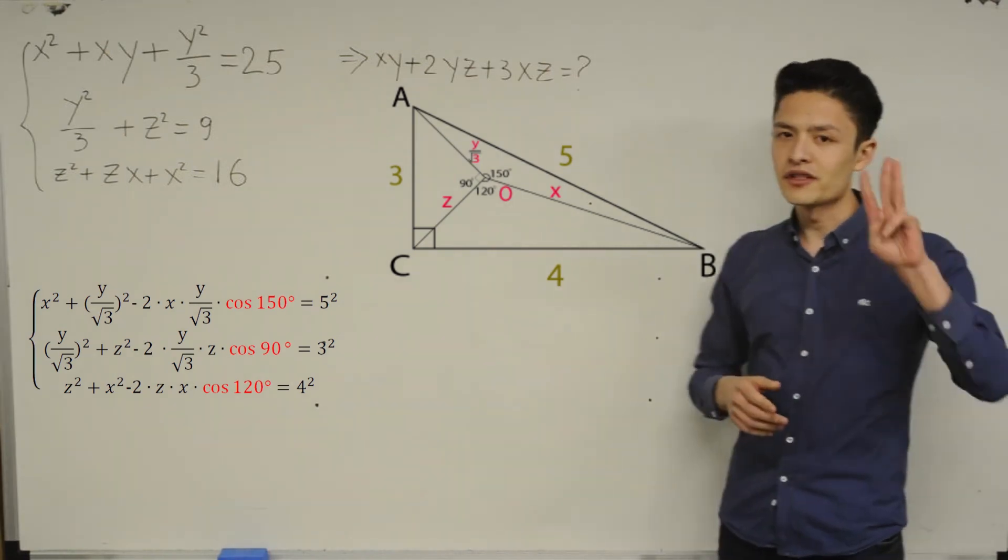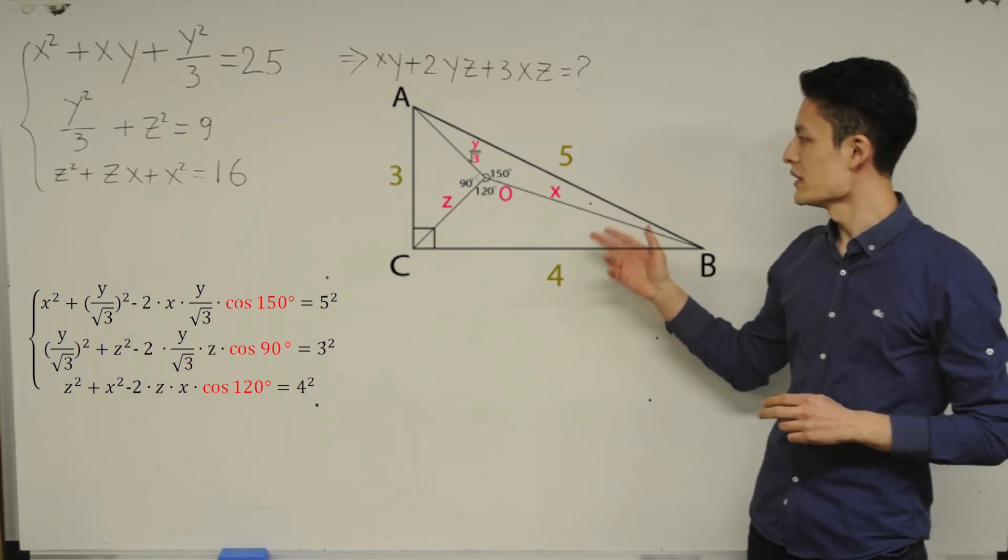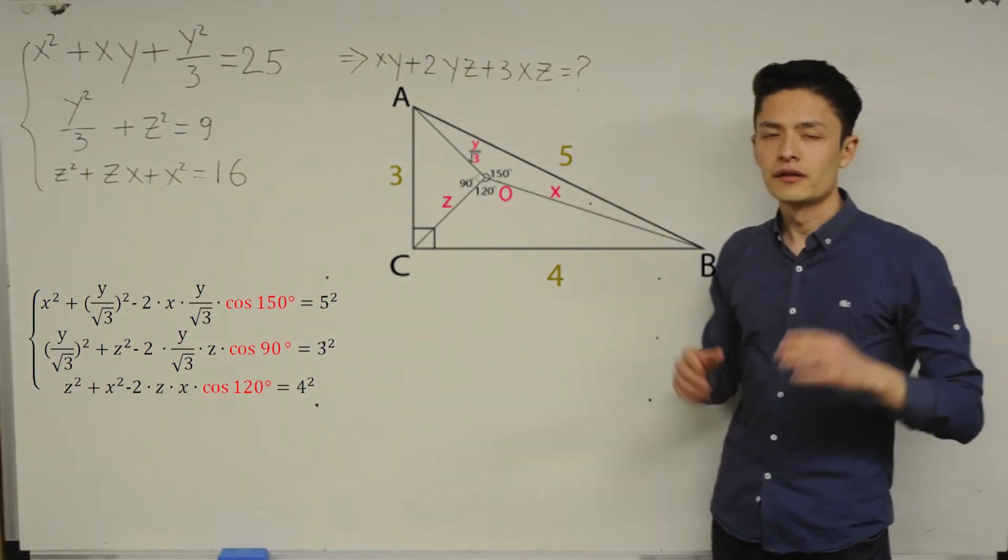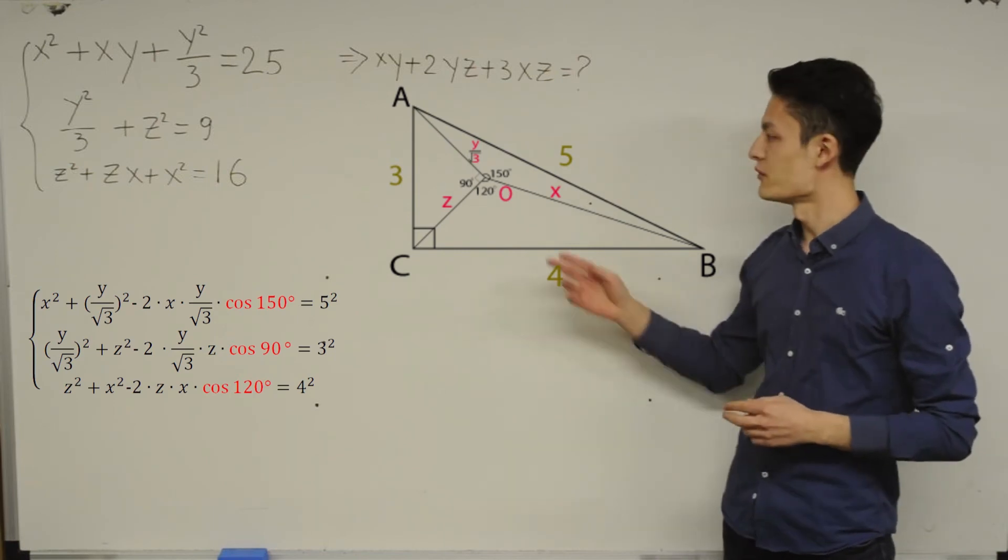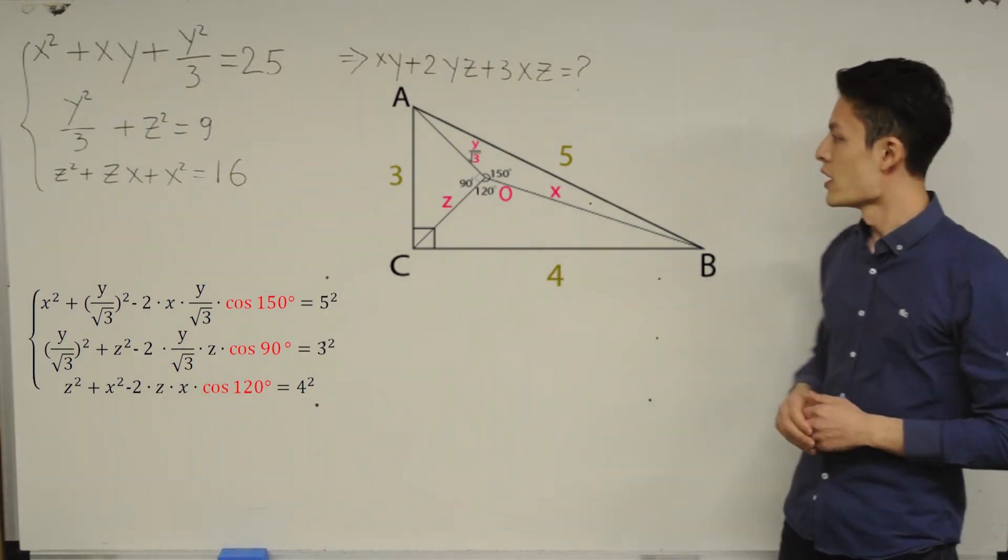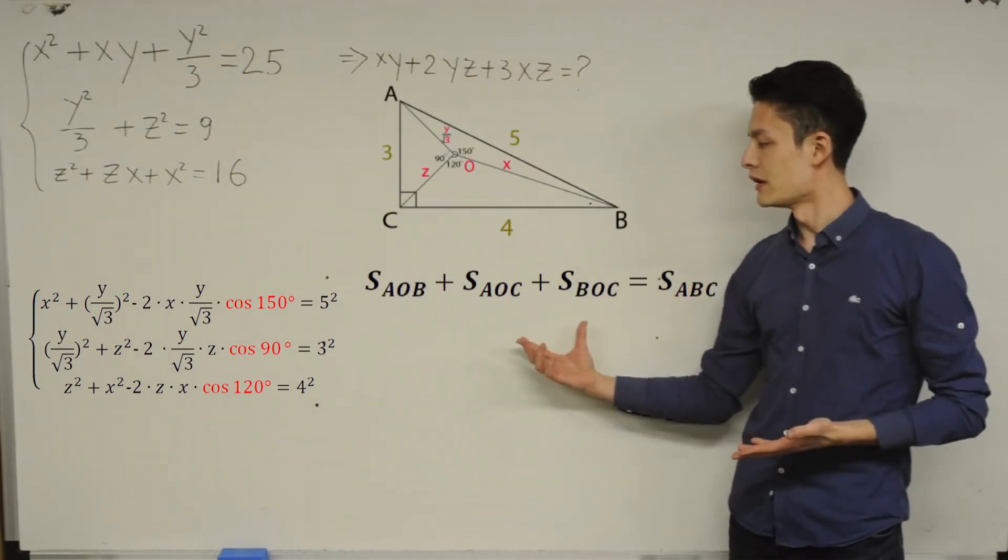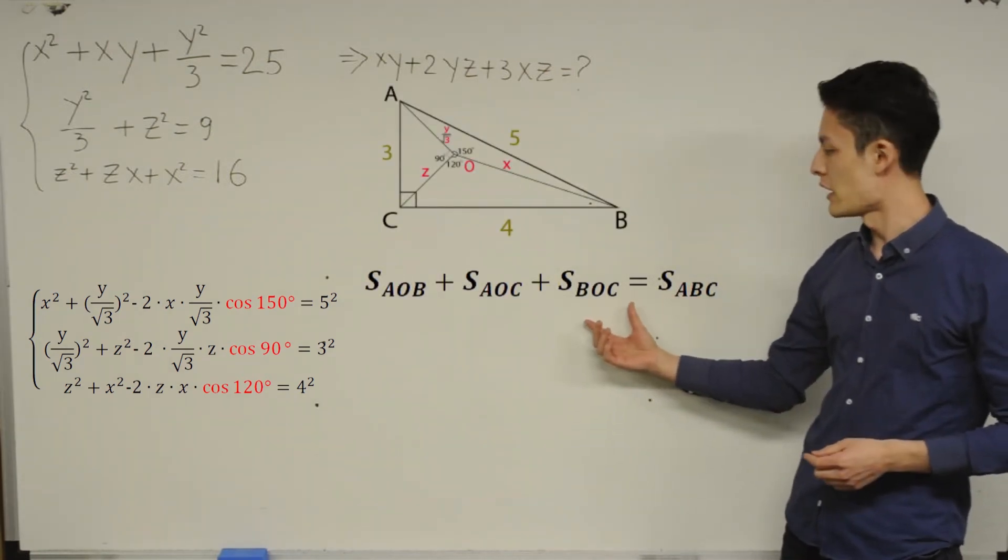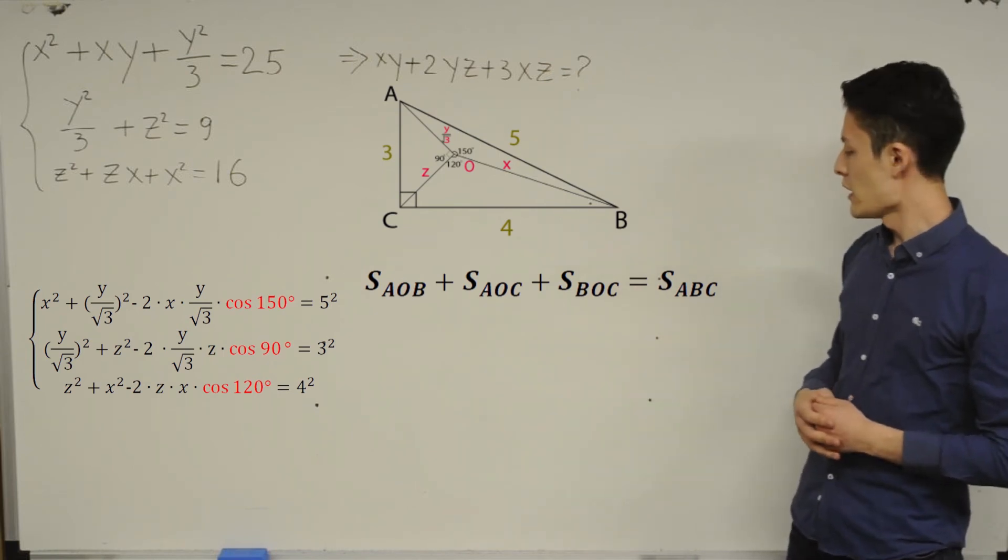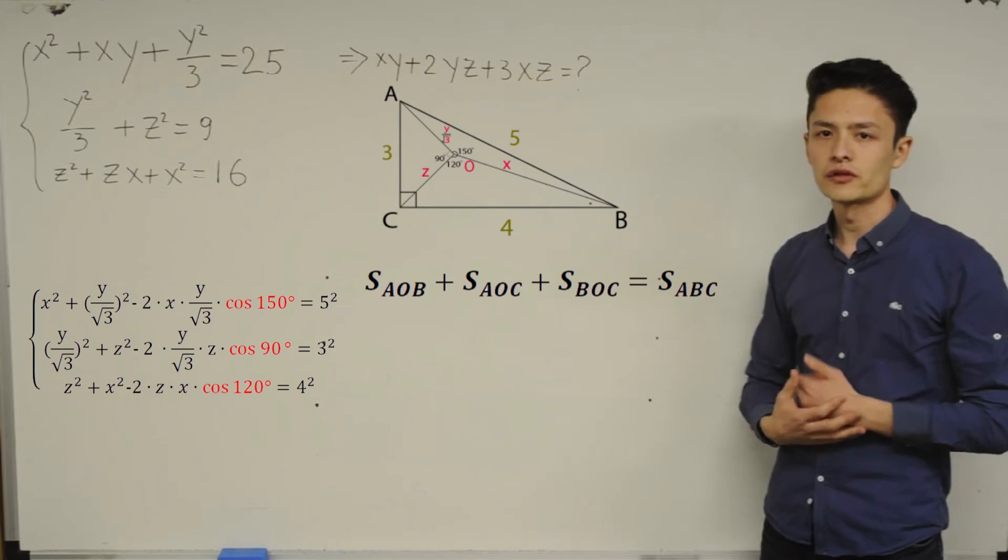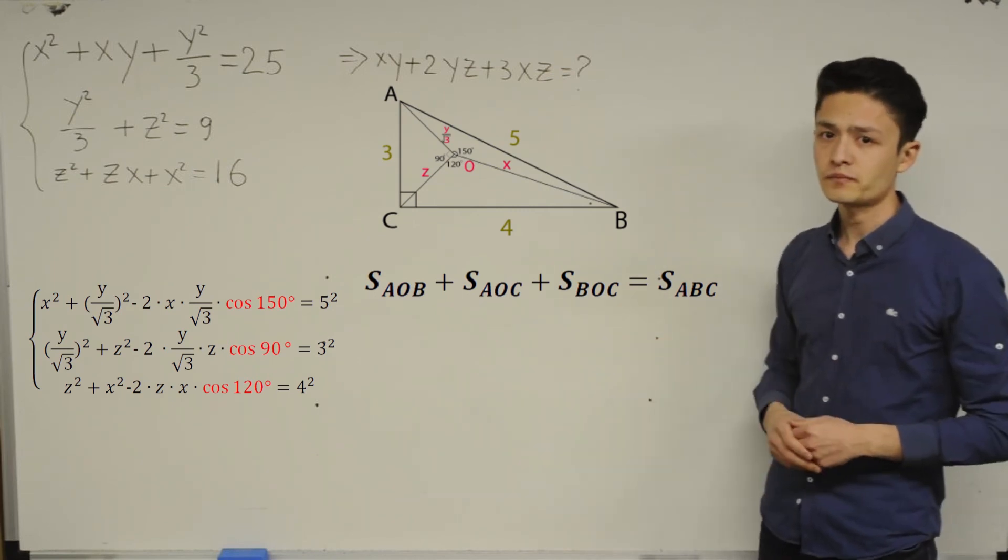And of course, how many small triangles we have? 3. AOB, BOC, and AOC. The area of these 3 triangles is equal to the biggest one, which is ACB. And now, based on this concept, we can write this equation. The area of AOB plus the area of BOC plus the area of AOC is equal to the area of ACB, the biggest one.